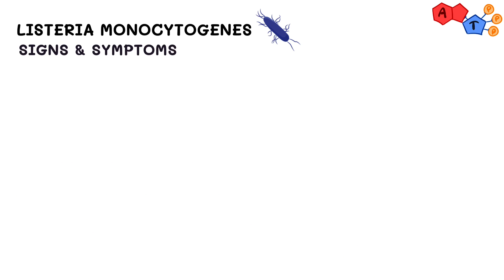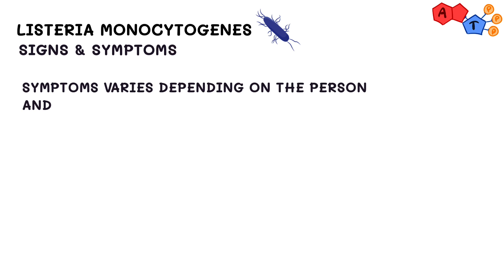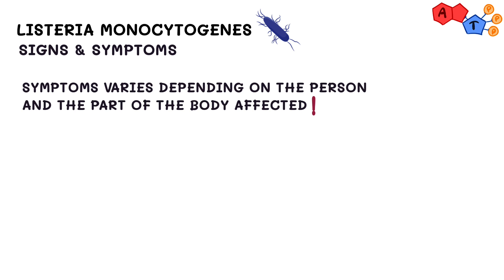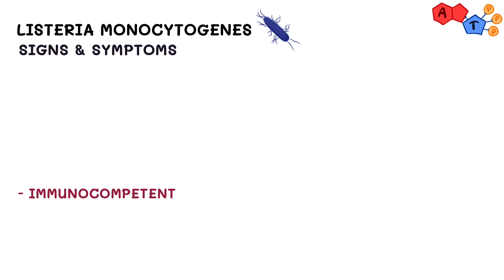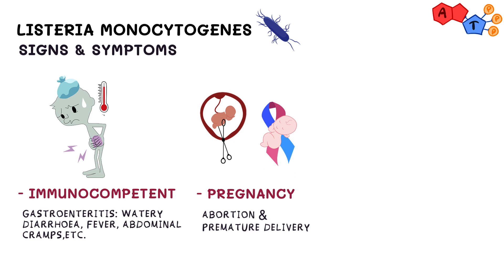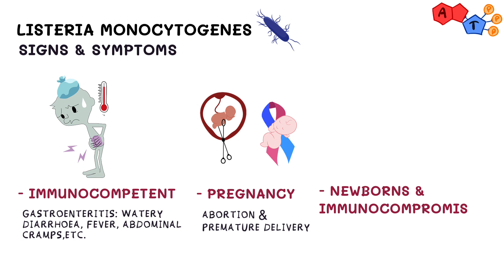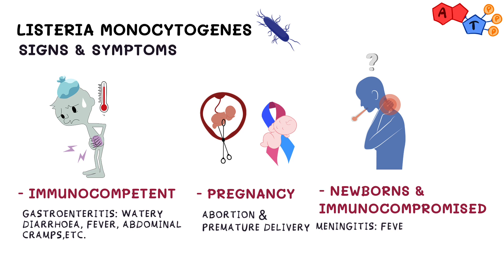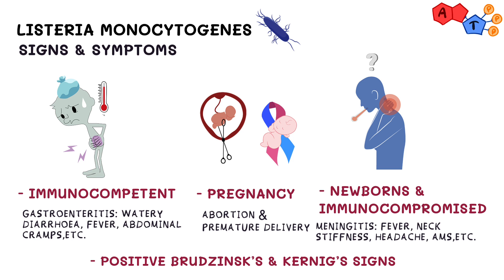Listeriosis can cause a variety of symptoms depending on the person and the part of the body affected. Infection in immunocompetent people can cause gastroenteritis with symptoms of watery diarrhea, fever, and abdominal cramps. In pregnancy, however, infection can cause abortion, premature delivery, and newborns affected at the time of delivery. Immunocompromised individuals can develop meningitis, which usually presents with fever, neck stiffness, headache, altered mental status, and other classic signs of meningitis. The patient may also demonstrate a positive Brudzinski or Kernig sign on physical exam.